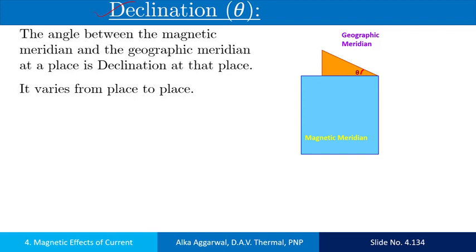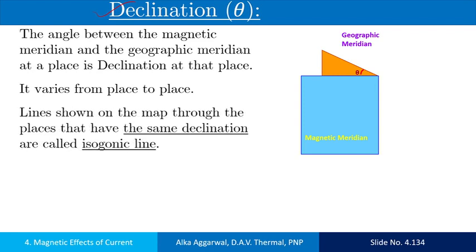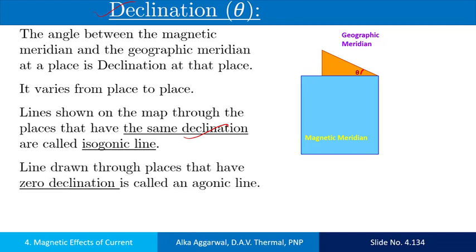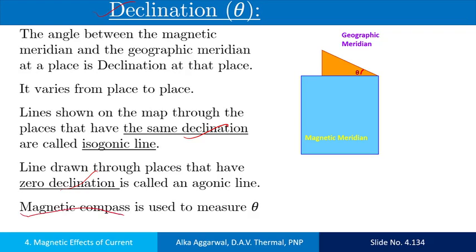The angle of declination is not constant for the earth — its value varies from place to place. The lines which join the points of the same angle of declination are called isogonic lines. The angle of declination is measured with the help of a magnetic compass.